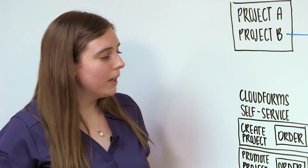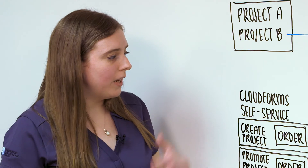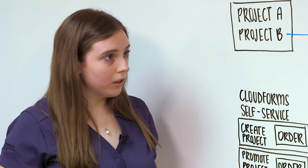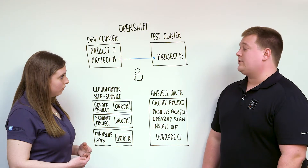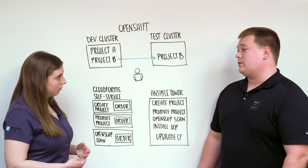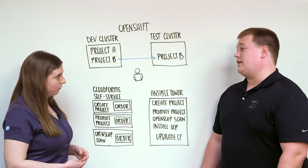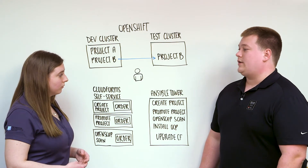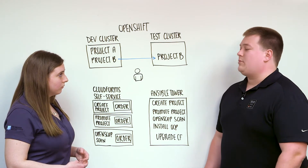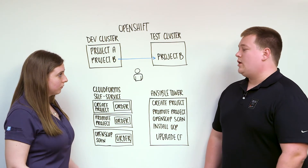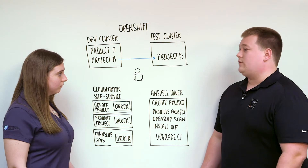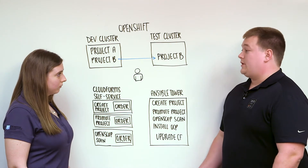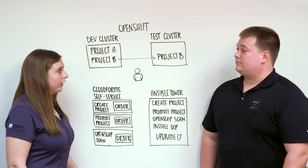So Ansible Tower is the front end from which you can do your whole installation? Yes, absolutely. And we can even store configuration details about our OpenShift inventory file that defines if we have any proxies, what our application versus our infrastructure and master nodes are. That can all be kept within Tower.